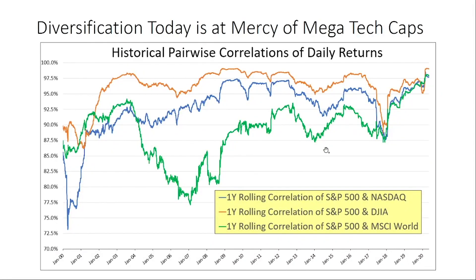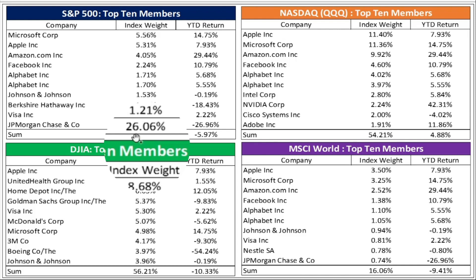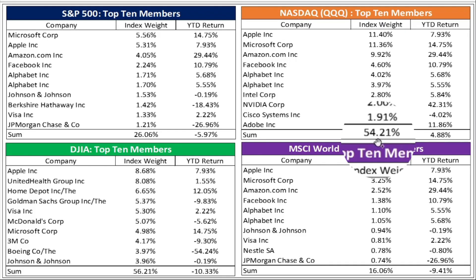Why is it? Let's go back to the charts. What we're looking at is the constituents of each of the four major indices — the top 10 companies underlying the S&P 500, the top 10 for the NASDAQ, the top 10 for the Dow, and the top 10 for the MSCI World. First, notice that with the S&P 500, the top 10 members make up 26% of the index. There are 505 different companies in the S&P 500, and the top 10 make up over a quarter. It's even worse with the NASDAQ — the top 10 members account for 54%, over half of the index.